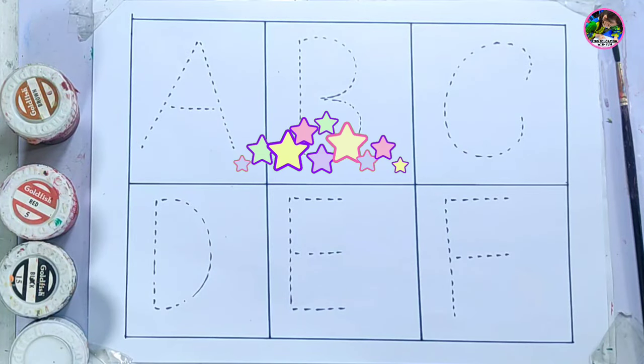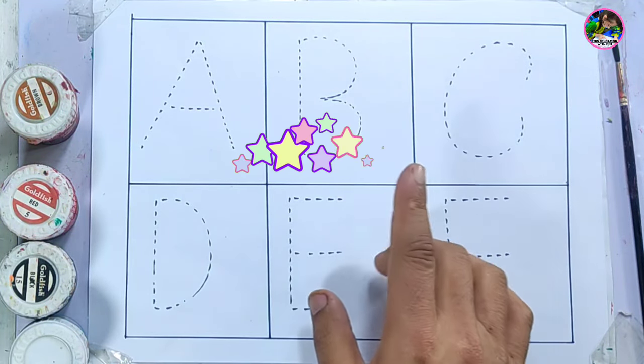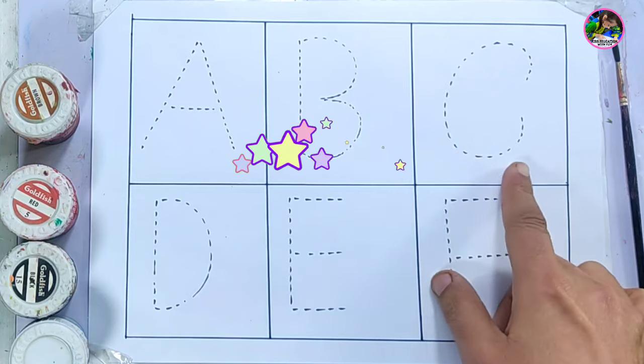Hello kids, welcome to kids education with fun. We are tracing letters A, B, C, D, E, F.